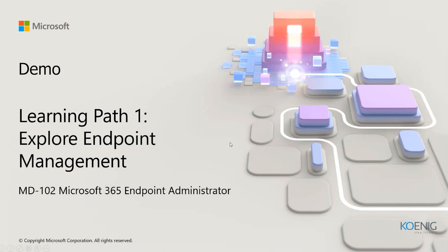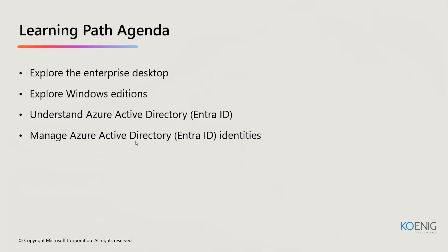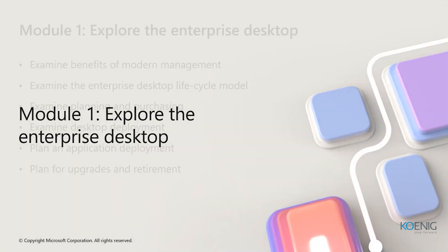Let's start with Learning Path One. As part of this learning path, we are going to be understanding and exploring endpoint management. In this learning path, we have four sections: explore enterprise desktop, explore Windows editions, understand Azure Active Directory, and understand Microsoft Entra ID identities. First, we'll explore the enterprise desktops.